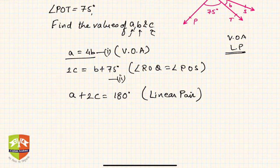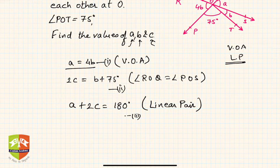So we got three relations and we know that three relations and how many variables? Three variables are there: a, b, and c. So now we can solve this.